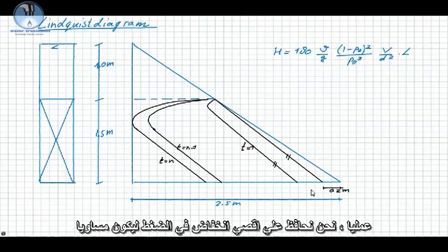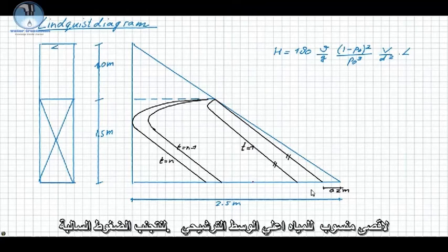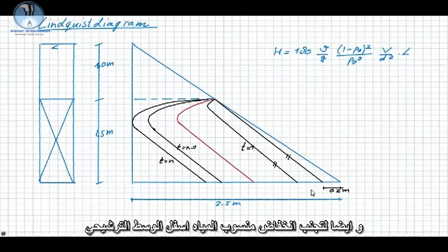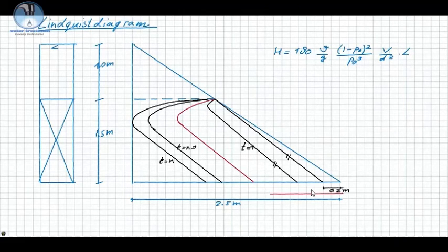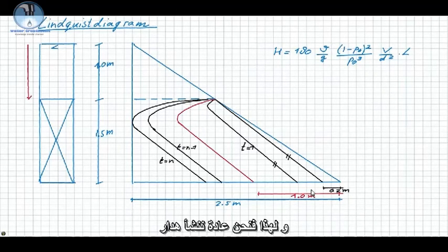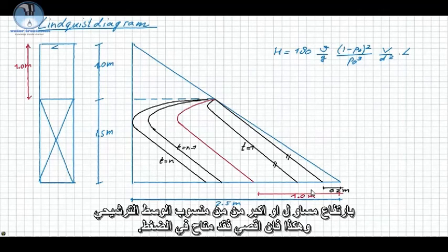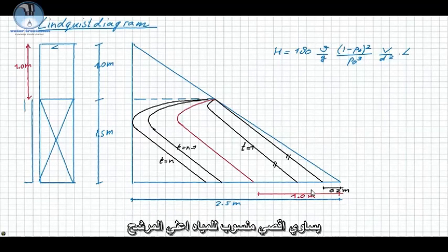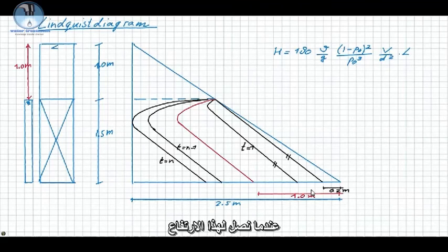In practice, however, we keep the maximum allowable pressure drop equal to the maximum supernatant water level to avoid these negative pressures and also to avoid the water level from dropping below the filter bed. Therefore, we normally construct an overflow downstream of the filter at a height equal to or higher than the top of the filter bed. In this way, the maximum available pressure drop is equal to the maximum supernatant water level. When this level is reached, the filter has to be backwashed.